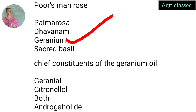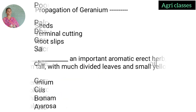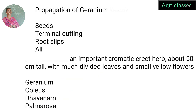Chief constituents of geranium oil — geraniol, citronellol, uneal, or both? The correct answer is both — geraniol and citronellol are present in geranium oil. Propagation of geranium — through seeds, terminal cuttings, rooted slips, or all? The correct answer is terminal cuttings only.